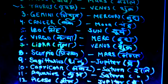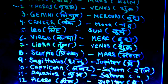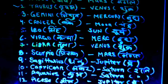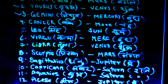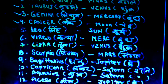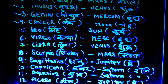The third zodiac is Gemini — in Hindi, Mithun — and the planet is Mercury or Budha. The fourth is Cancer, in Hindi Kark, and the lord is Moon or Chandruma. Then we have Leo, and the Hindi name is Singh. The lord is the Sun, or Surya.